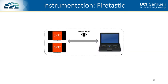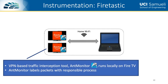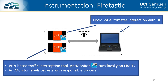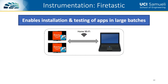Our tool for instrumenting the Fire TV platform, which we call FireTastic, is a combination of existing tools. To log network traffic, we use AinMonitor, a VPN-based traffic interception tool from some of our past work. AinMonitor runs and logs traffic locally on the Fire TV device, labels every packet with its responsible process, and attempts to decrypt traffic. To automate interaction with Fire TV apps, we use a tool called Droidbot, which operates over the Android debug bridge. It maps the UI of the Fire TV app and explores it in a strategic manner. Since Droidbot can communicate with multiple devices from a single laptop, we can parallelize testing of apps across multiple Fire TVs, again enabling large-batch testing.